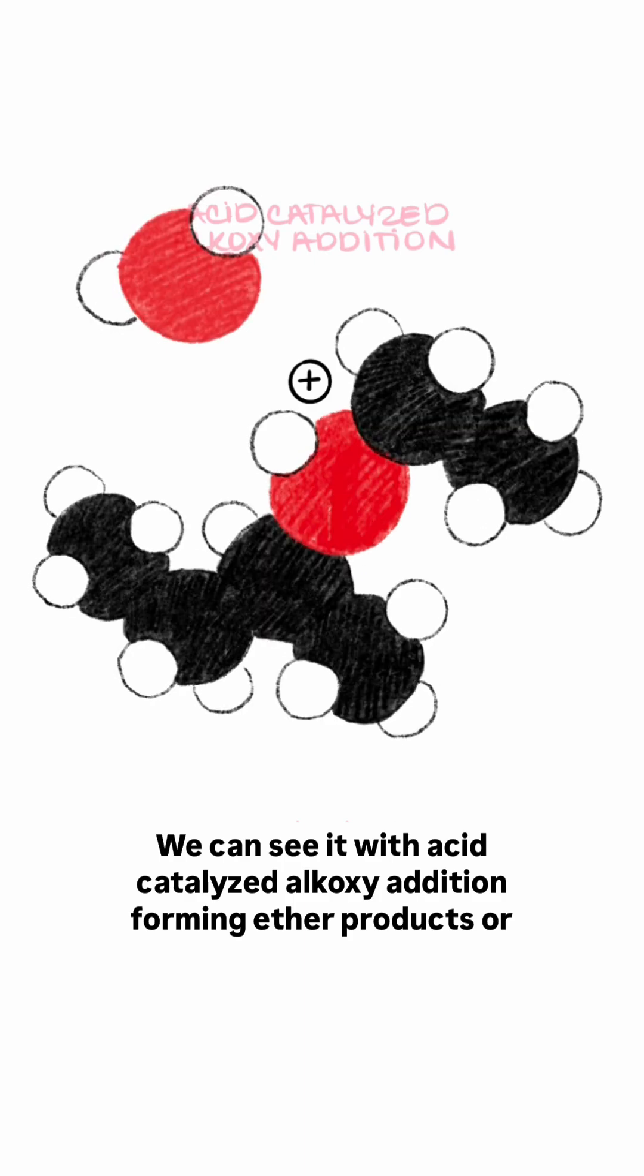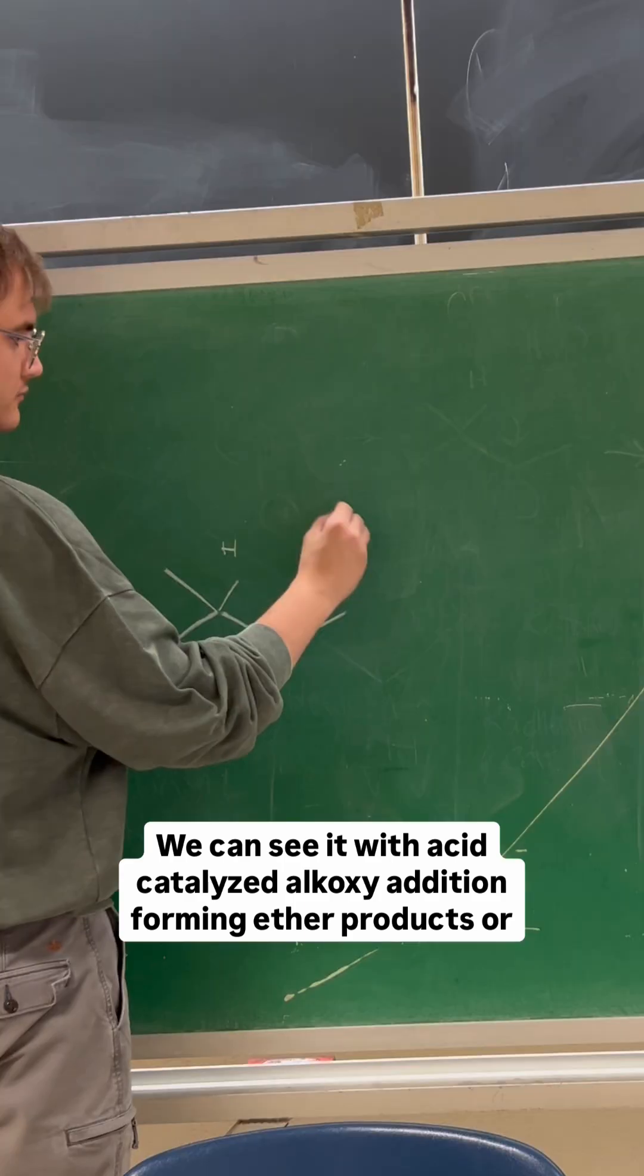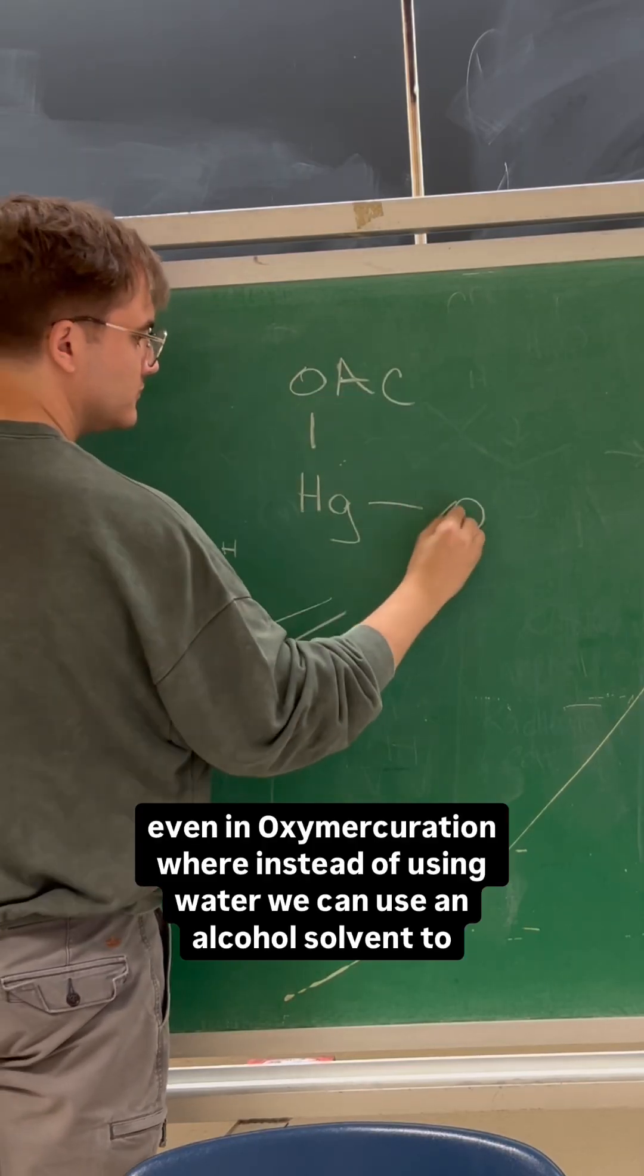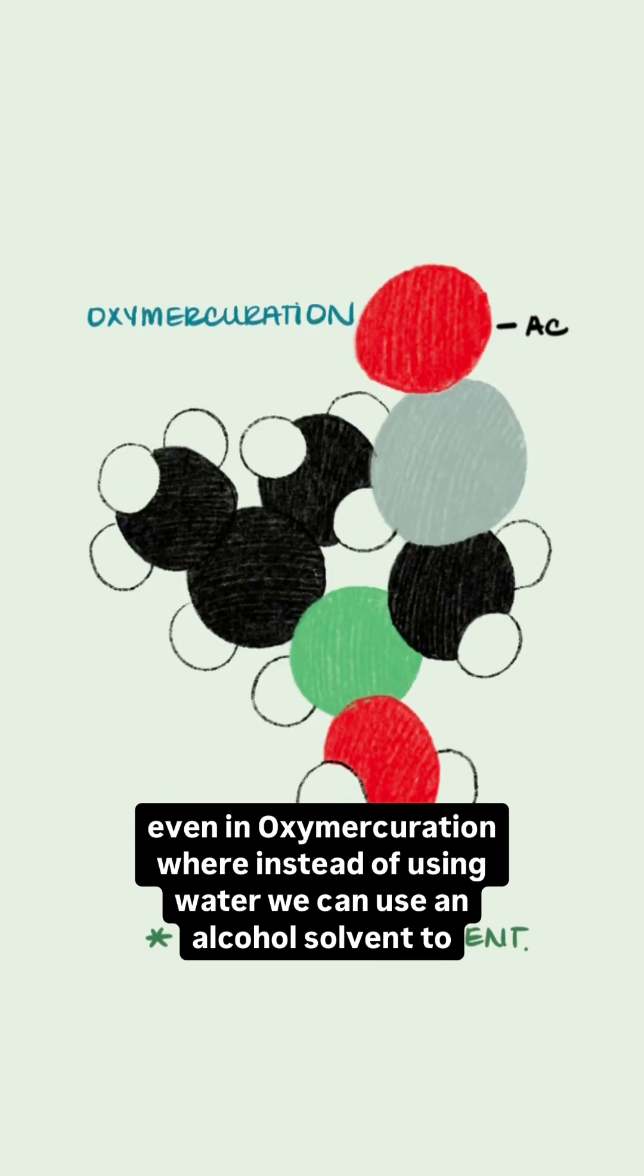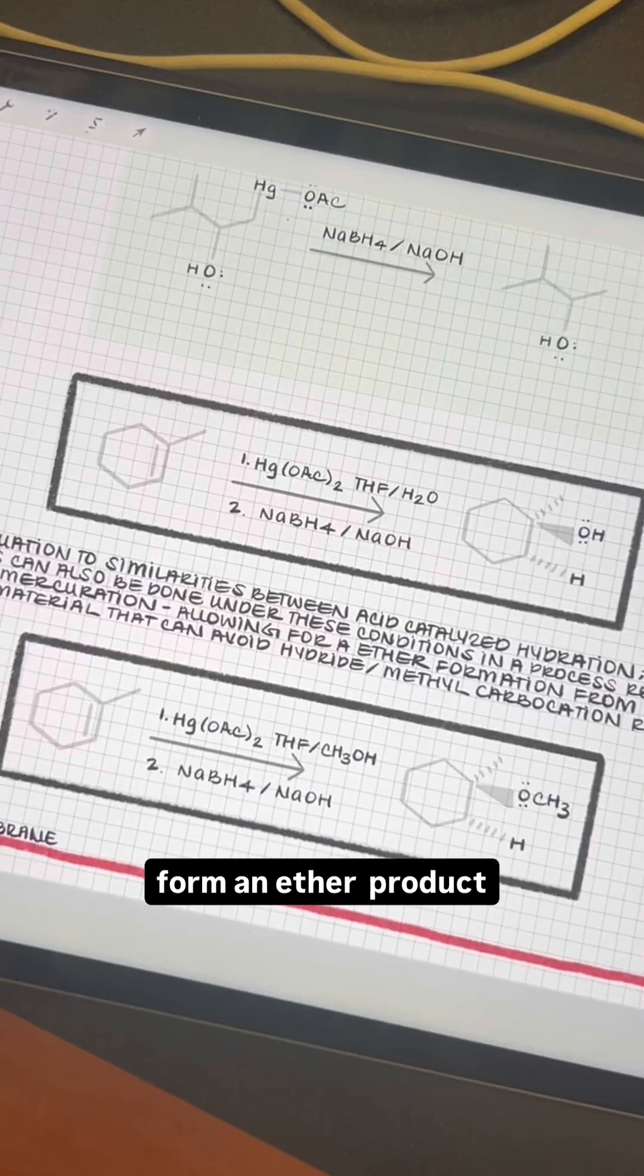We can see it with acid-catalyzed alkoxy addition forming ether products or even an oxymercuration where instead of using water, we can use an alcohol to form an ether product.